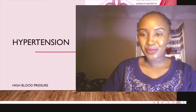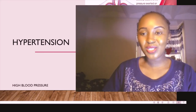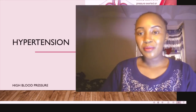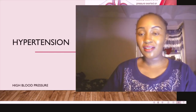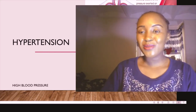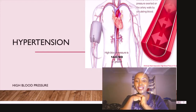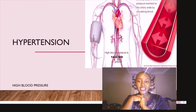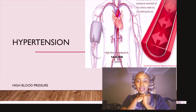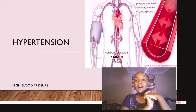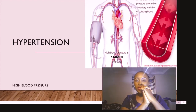Today's topic is hypertension, and this video is meant for nursing education as well as patient teaching and health education. I've used simplified language, away from medical jargon as much as possible, so stay tuned and let's learn together. According to the American Heart Association, high blood pressure is defined as a blood pressure of above 140 over 90. 140 is the systolic blood pressure, while 90 is the diastolic. Blood pressure is the pressure exerted on the artery walls by the circulating blood.